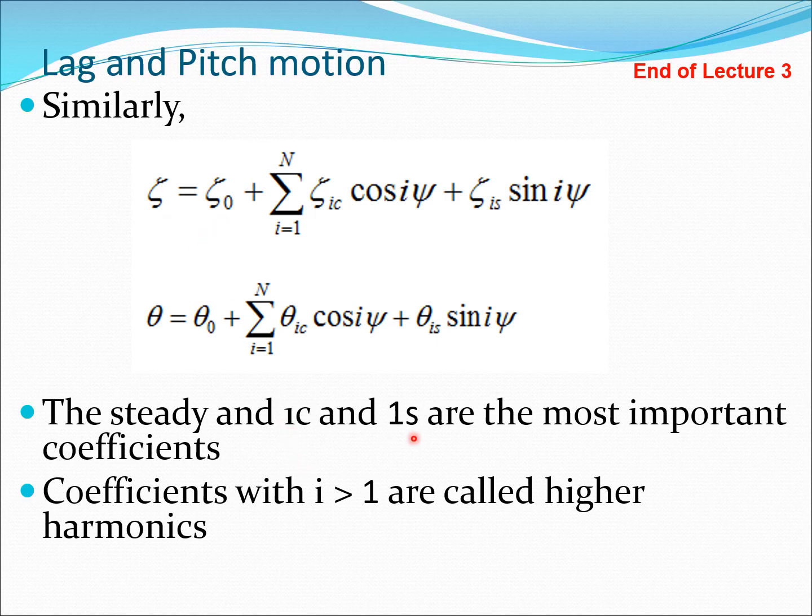The steady and the 1c and 1s components are going to be the most important coefficients. They are typically the largest coefficients, and coefficients with i greater than one are known as the higher harmonics. Zeta and beta are actually responses, but theta is typically an input. The pilot inputs theta zero, theta 1c, and theta 1s, and the remaining thetas are typically all zero. We will later see how the pilot can input these three values to the aircraft using control levers.